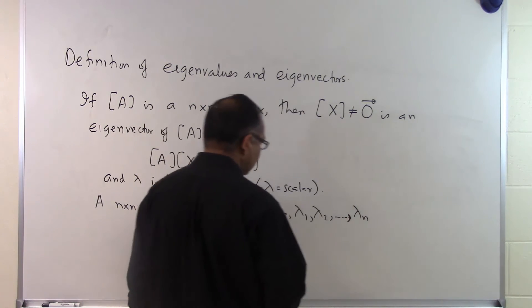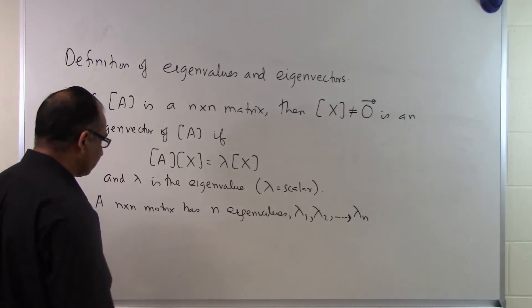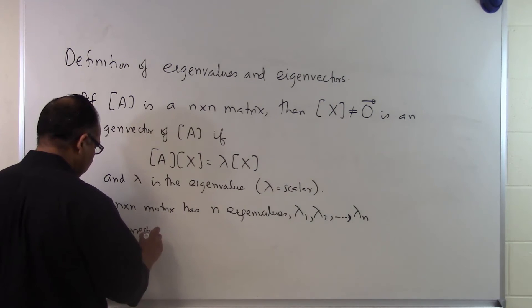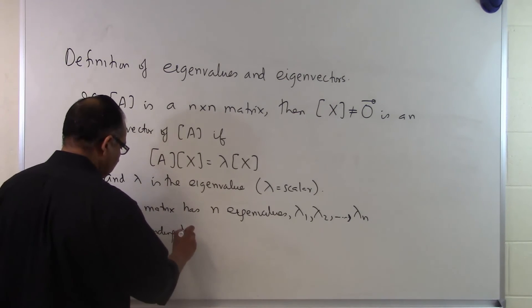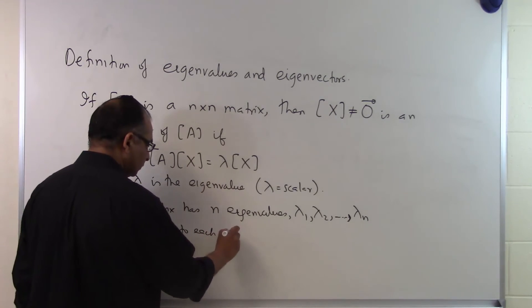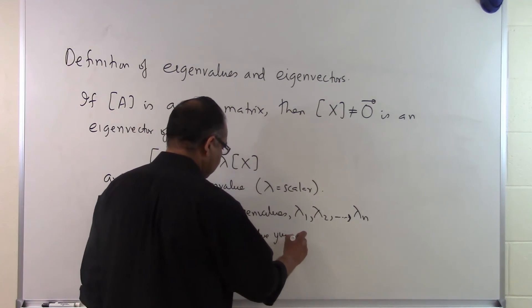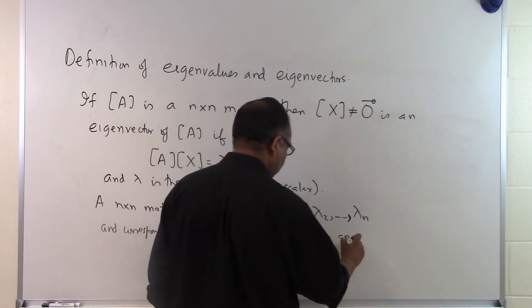They are not necessarily going to be unique but we will have n different eigenvalues. And corresponding to each eigenvalue you will have an eigenvector.